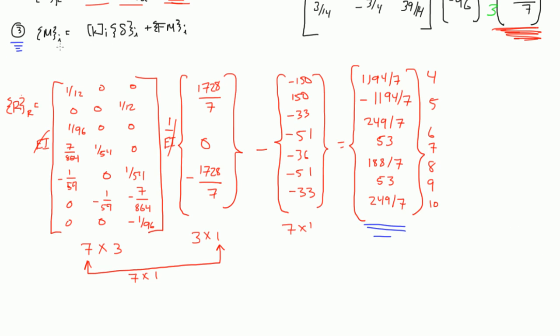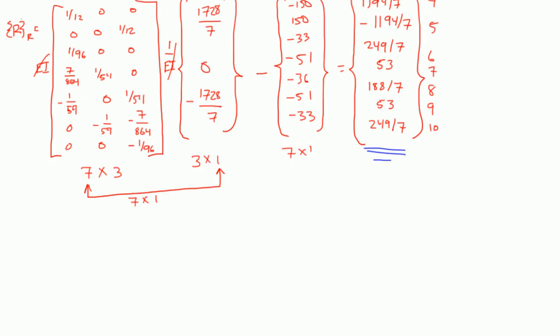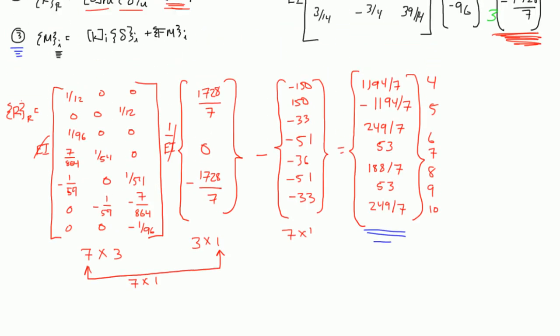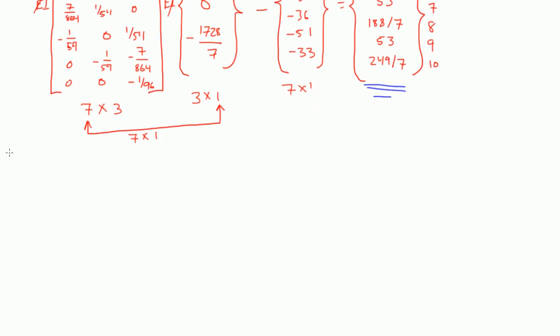So, there's 4 elements. That means we have to do this equation 4 times. Let's just start with, let's see how much space I have. Let's do M sub 1.